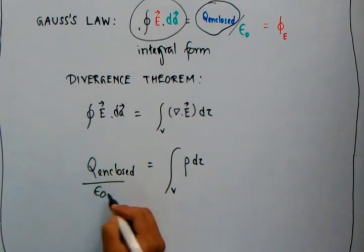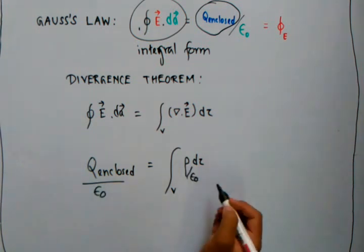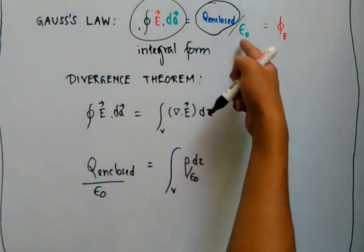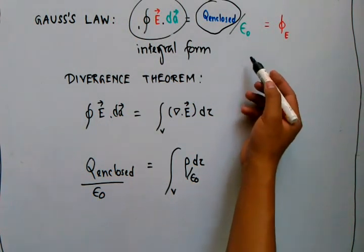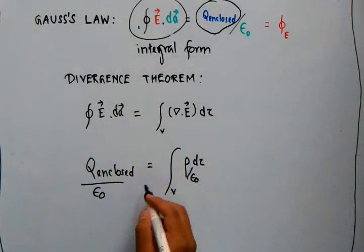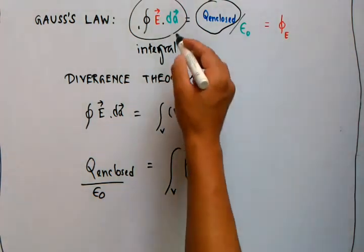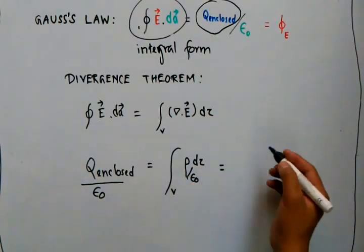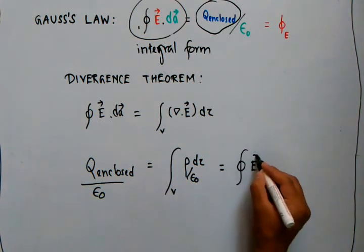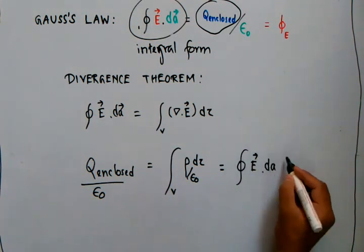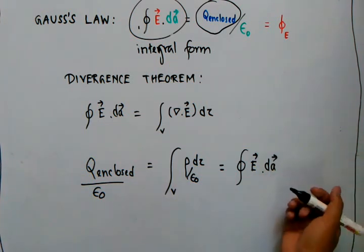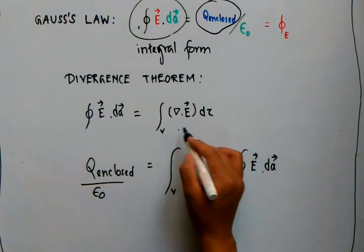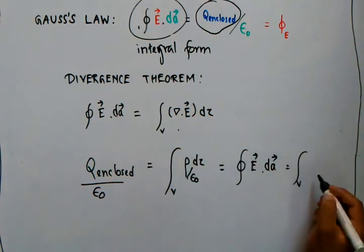If we divide it by epsilon_0, we know from Gauss's law that this equals the surface integral of E·dA, which in turn equals the volume integral of ∇·E dV by the divergence theorem.